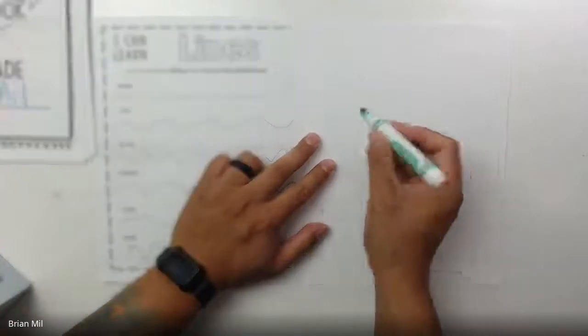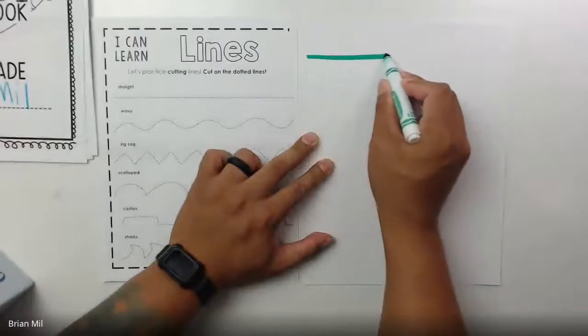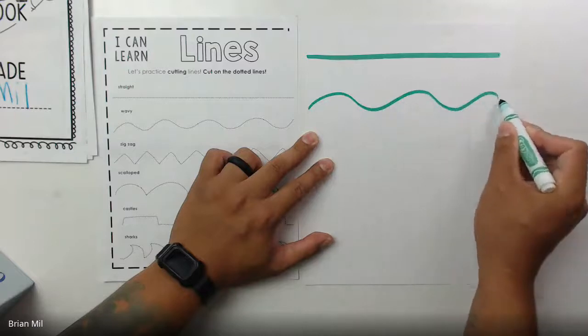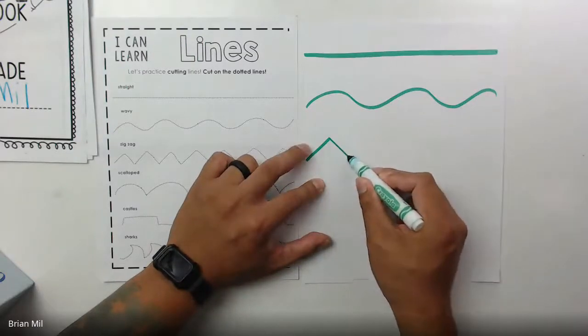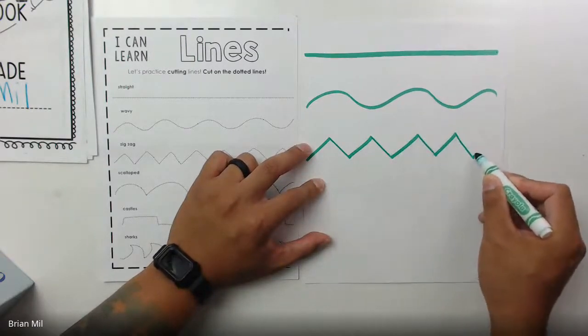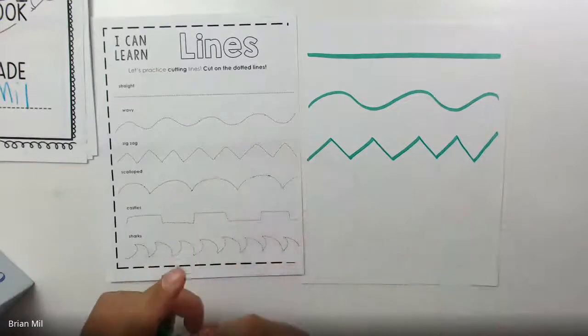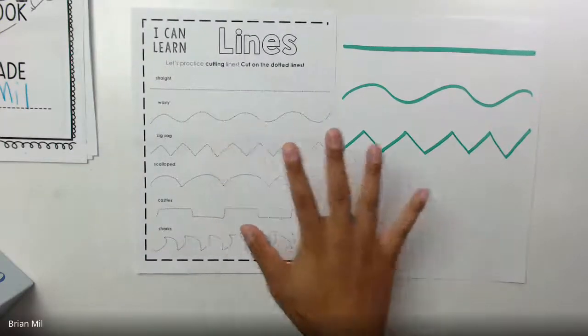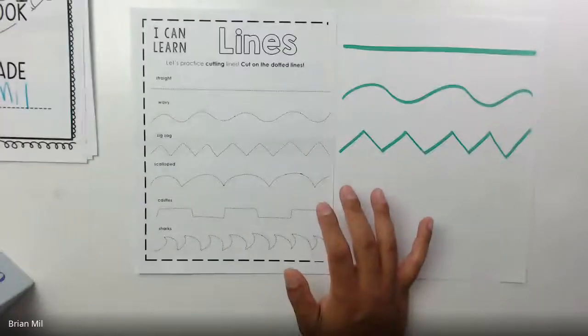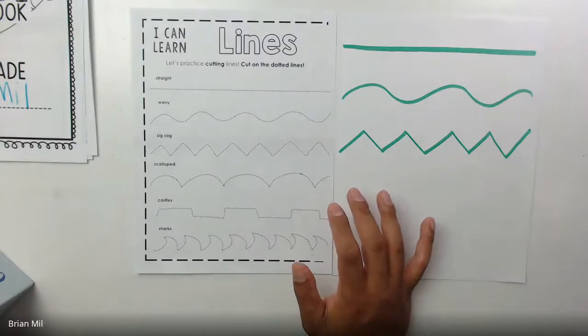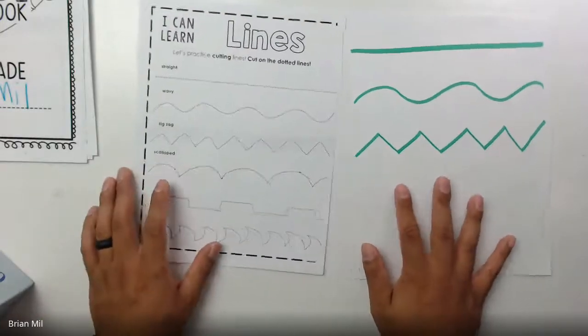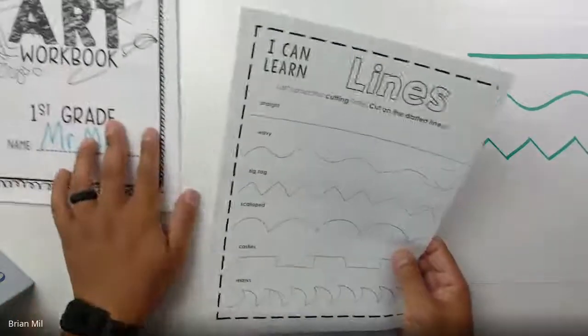If you have a blank sheet of paper, I just want you to draw a couple lines for now. Draw a straight line, a wavy line, and zigzags. However, if you don't, this is fine.